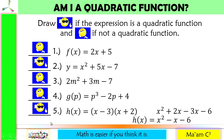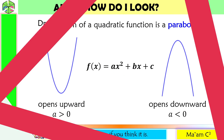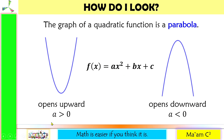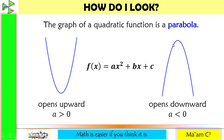The graph of a quadratic function is a parabola. A parabola opens upward when the value of a is greater than 0, and opens downward when the value of a is less than 0.